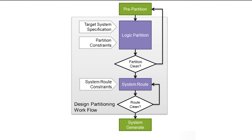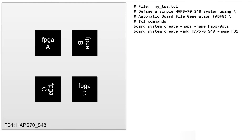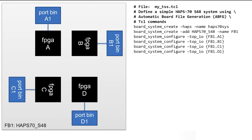To model the resources available to host the ASIC design, Proto-Compiler uses a target system specification. In this refinement, bins are defined to allocate top-level IOs to each FPGA.